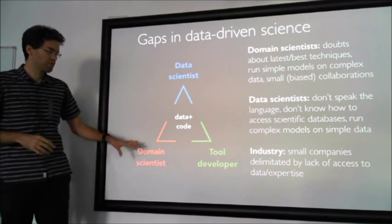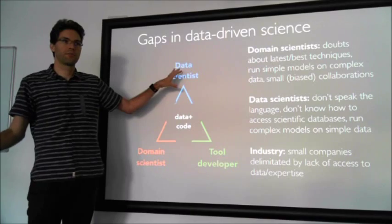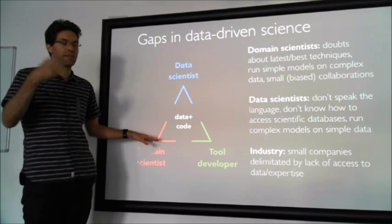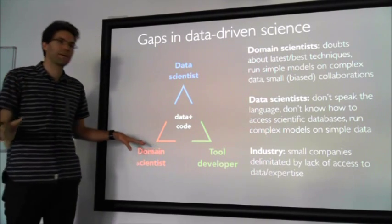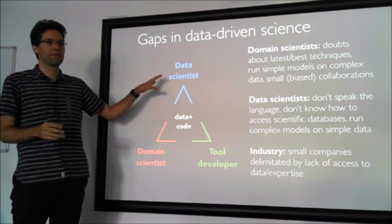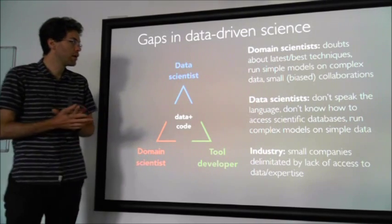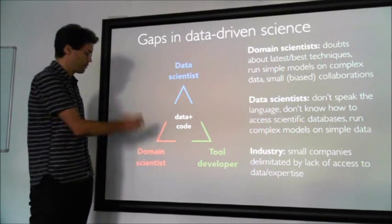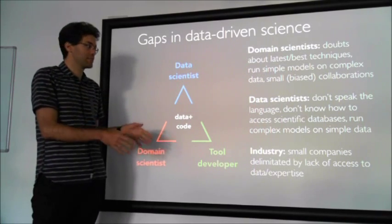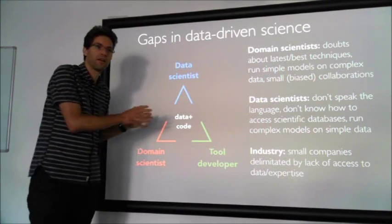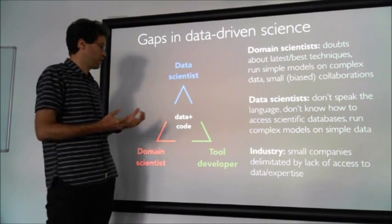Data scientists, on the other hand, don't speak the language of domain scientists. They don't know where their algorithm would be best used, because they have no idea what domain scientists are doing, they don't speak the language, and they don't know where the data is. There are huge scientific databases with lots of valuable information, but data scientists typically don't know how to access them. So the result is that domain scientists have complex data but use simple algorithms, while data scientists use complex algorithms on very simple datasets — typically datasets from the 90s or 20 years ago.